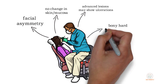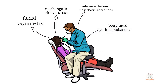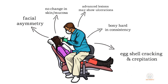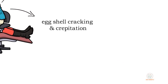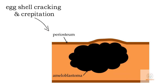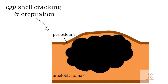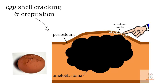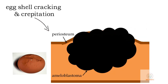On palpation, the swelling is hard in consistency. Continuous tumor expansion may lead to thinning of the cortical plate, causing eggshell cracking and crepitation. As the tumor has a slow growth rate, it allows the periosteum to develop a thin shell of bone ahead of the expanding lesion. This thin shell of bone cracks when palpated, and hence is called eggshell cracking. Perforation of bone is very rarely seen.